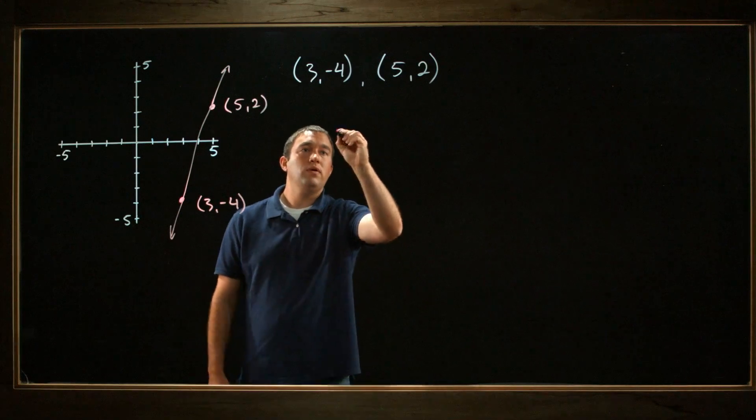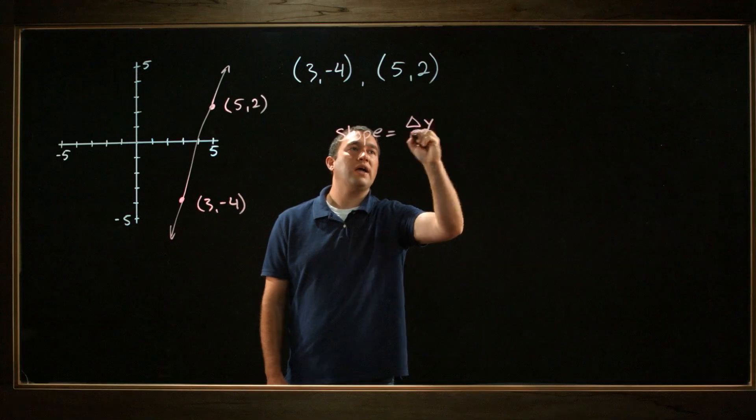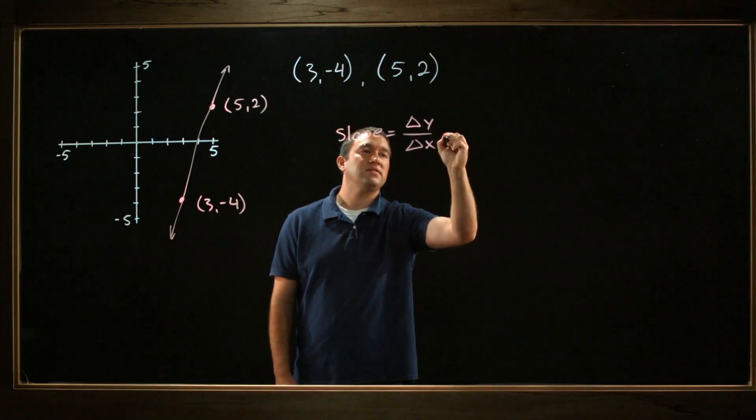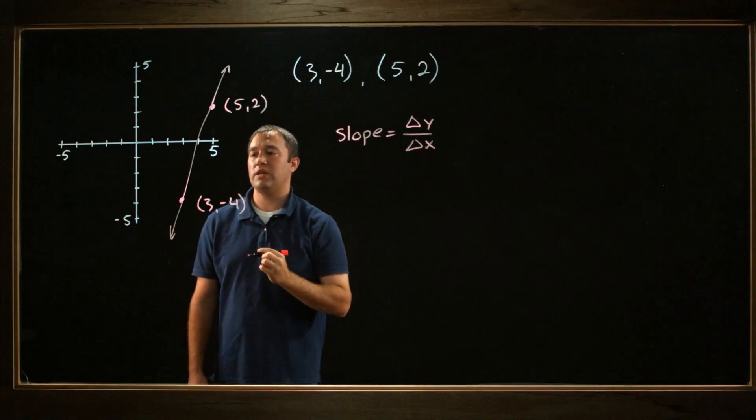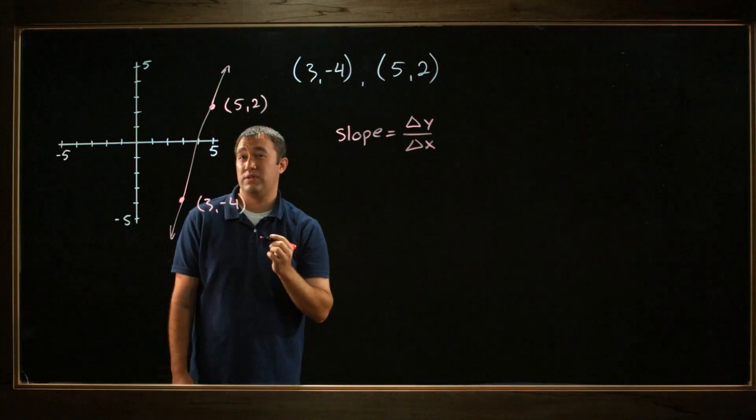Well, the slope is equal to rise over run, or the change in y over the change in x. Let's just look at our picture and look at, from this point to this point, what's the change in y and what's the change in x?